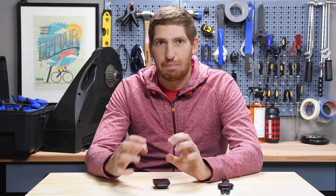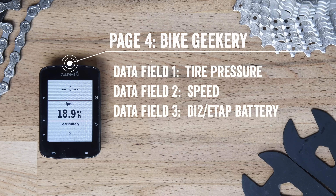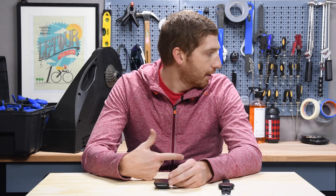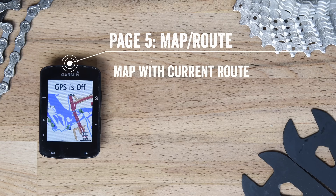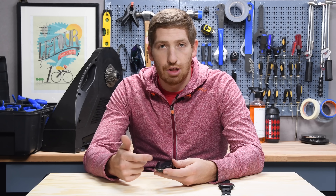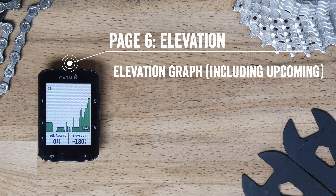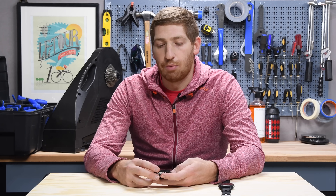After that I have a bike tech focus screen. I've got my pressure sensor on both tires using the Quark Tire Whiz — I did a video on that — plus current speed, and gear shifting battery status. On my main bike it's E-Tap; on my tri-bike it's Di2. Then there's the GPS map — we're inside so no GPS right now, but on the Edge 520 Plus I get a full map. And finally an elevation graph — not super useful here in Amsterdam, but great in the Alps.